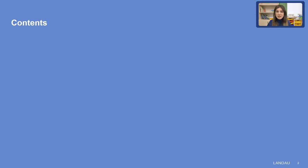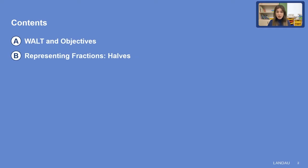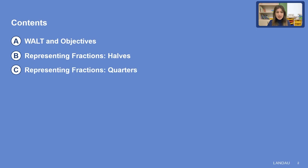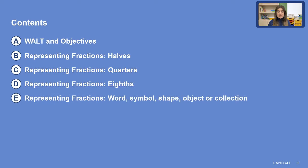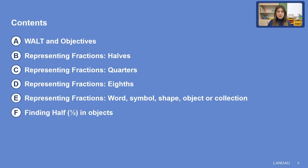Let's start with the contents page: vault and objectives, representing fractions halves, representing fractions quarters, representing fractions eighths, and representing fractions by word, symbol, shape, object, or collection, finding half in objects, finding a quarter in objects, finding one-third in objects, and practice.